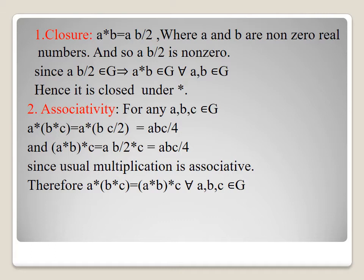Associative property: for any a, b, c in G, a star (b star c) equals a star (bc/2) equals a(bc/2)/2 equals abc/4. And (a star b) star c equals (ab/2) star c equals (ab/2)c/2 equals abc/4. Since usual multiplication is associative, a star (b star c) equals (a star b) star c for all a, b, c in G.